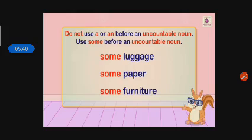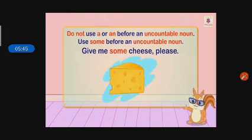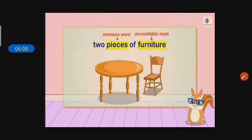Some luggage, some paper, some furniture. Give me some cheese please — you can't count cheese, that is uncountable, so you use some or more. Give me more cheese. Two pieces of furniture — you can't count furniture directly, so that's why it is an uncountable noun. You can use the word pieces for furniture.